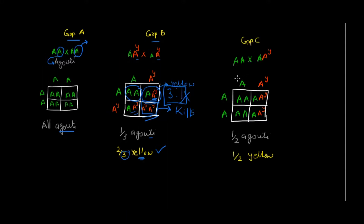Now let's look at Group C. One set of mice has the normal wild-type genotype AA, and the other set is heterozygous for the lethal allele — these are yellow-colored mice. When you cross them, half the offspring contain normal wild-type genes and are agouti, and the other half are heterozygous for the lethal allele and show phenotypic change, giving yellow mice. This is not lethal.